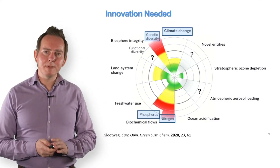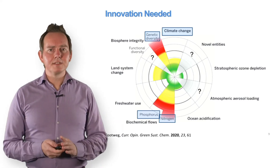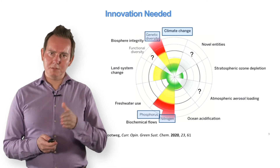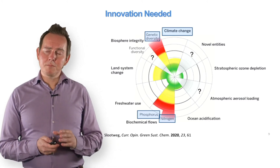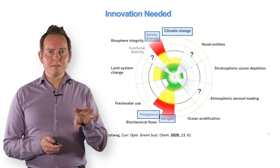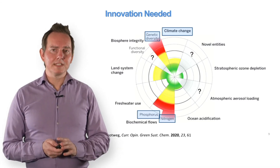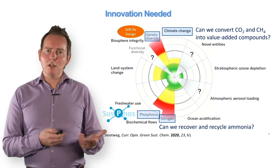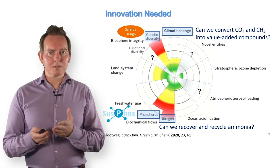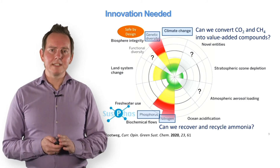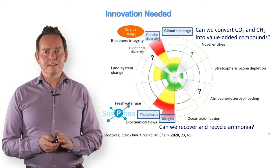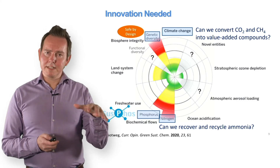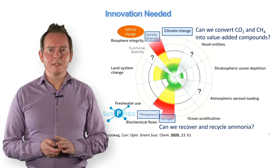A lot of innovation is needed to combat climate change. We need to avoid CO2 emissions and preferably develop chemistry that starts from CO2 to make new products. To reduce the loss of biodiversity, we need to focus on chemicals and materials that are much more benign. And if we look at the essential elements phosphorus and nitrogen, what's essential is: can we recover those elements and subsequently recycle them?